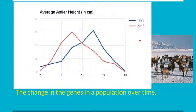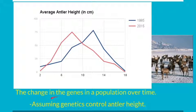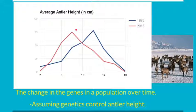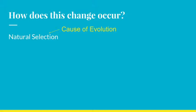So the antlers over time shrank — over 30 years, multiple generations of elk, the antlers became smaller. We're assuming that this change in antlers was controlled by genetics, because evolution is all about the change in the genes. We'd have to assume that antler height was controlled by genetics, and that's why the average height of the antlers got smaller — because the genes changed over time. This explanation doesn't take into account why the genes changed. It's just an observation of evolution.